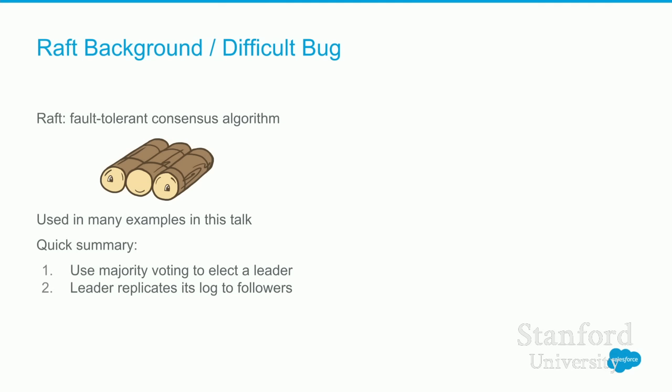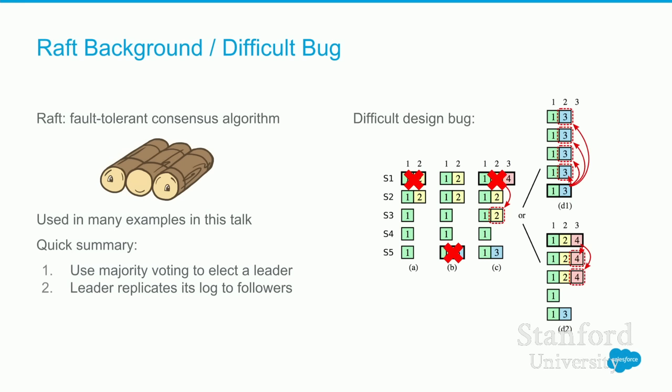In this talk, I'm going to use a lot of examples from Raft. Raft is a consensus algorithm — it was my PhD topic. You don't need to know all the details, but you do need to know it's split into two phases. First, the Raft cluster will elect a leader, and then it'll get that leader to replicate its log to the other servers in the cluster.